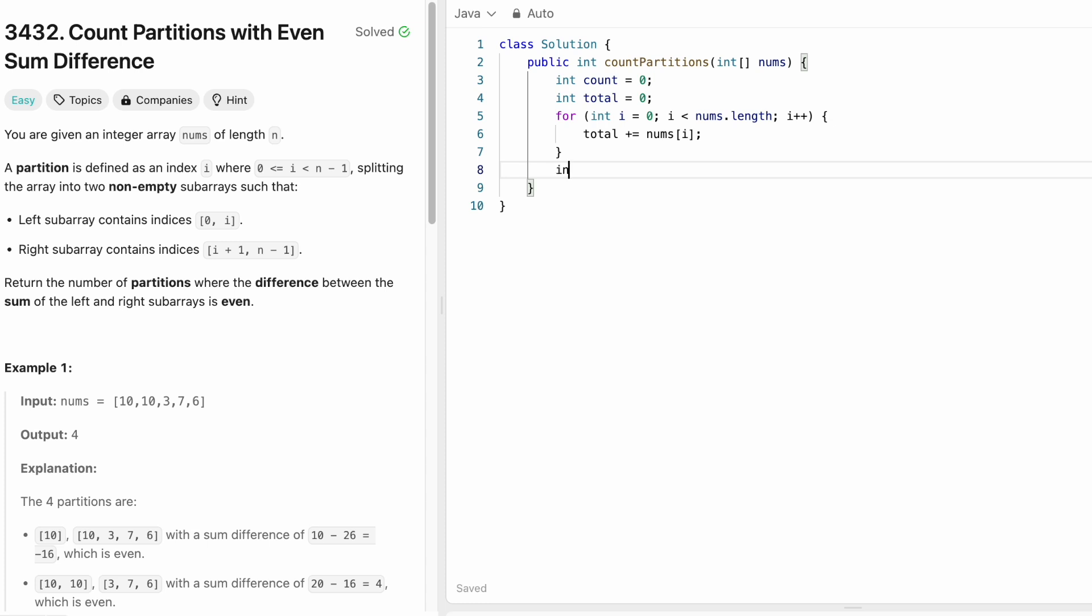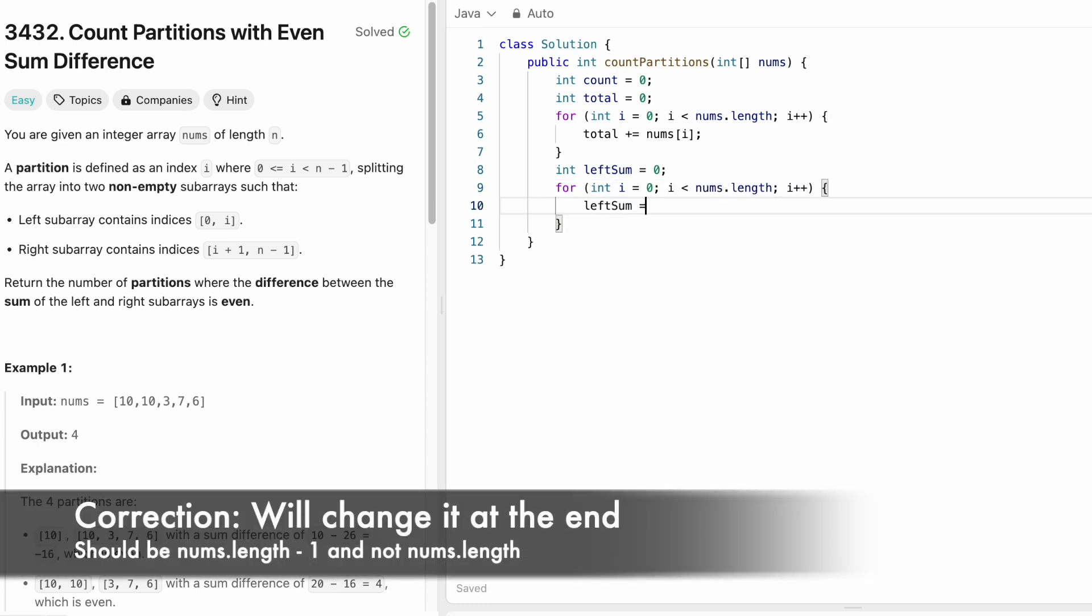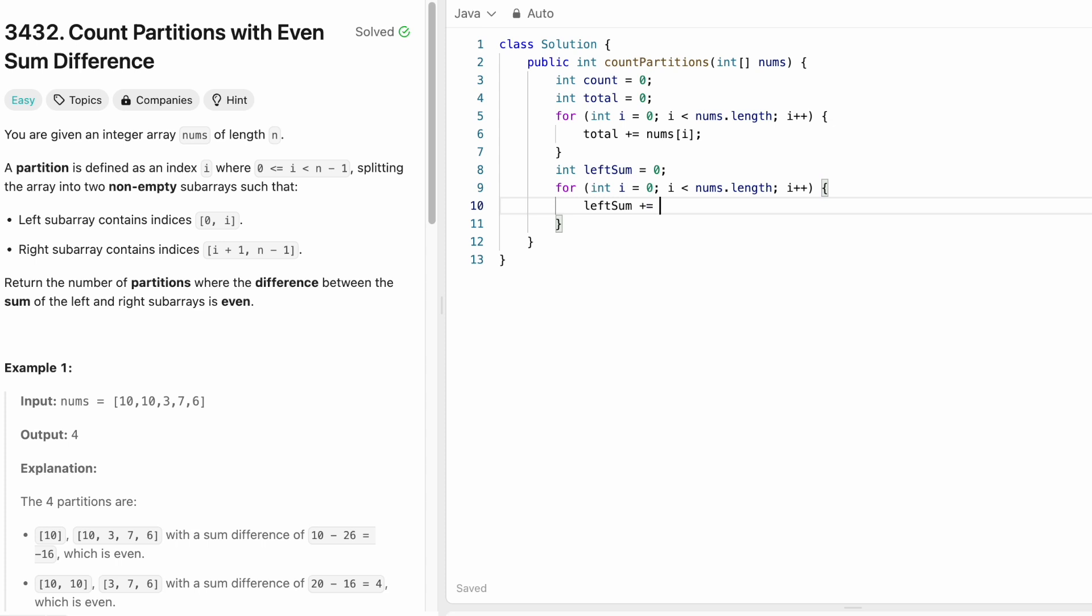Now let's count the left sum. Now let's iterate through the input array from zeroth index until n-1, because we need to leave at least one element in the right subarray. So we only go until n-1. So again, i will start from 0. To the left sum add the current element. So we keep adding that, nums of i. Now we have to calculate the right sum. How do you count the right sum? You can subtract left sum from the total.